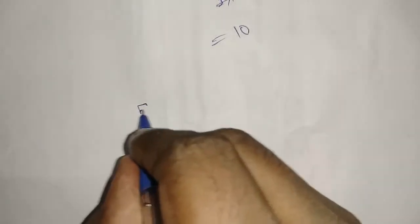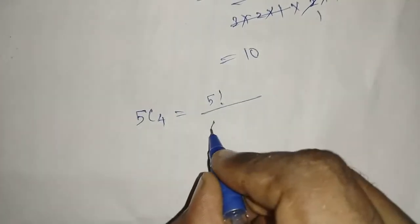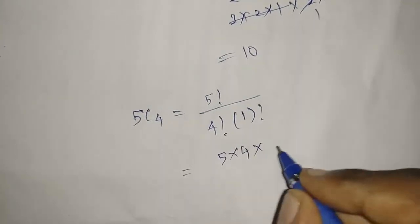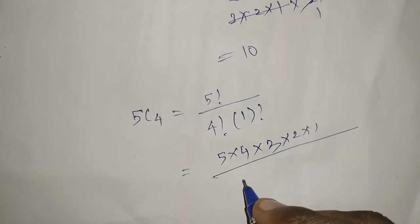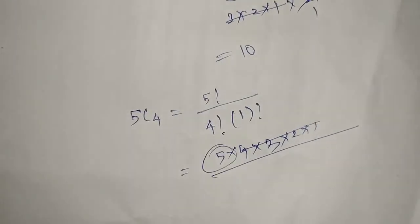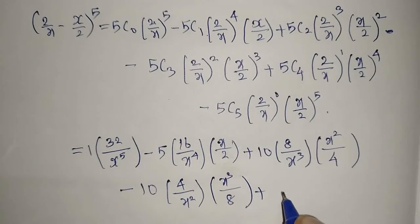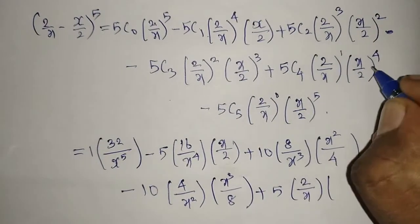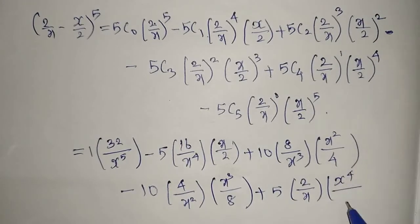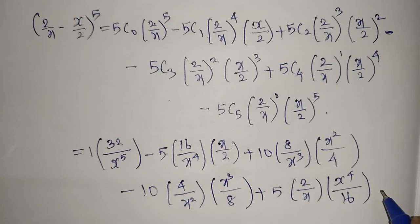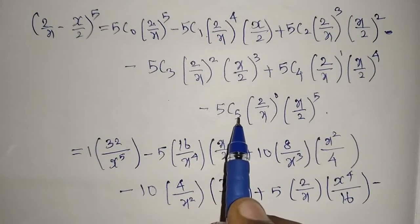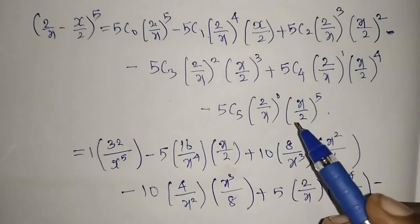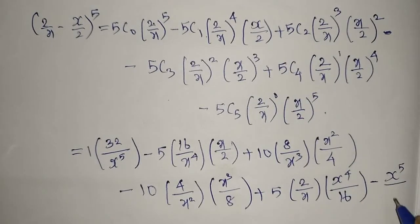For 5C4: 5! / (4! * 1!) = 5. So 5C4 = 5, multiplied by (2/x)^1 = 2/x and (x/2)^4 = x^4/16. For the last term, 5C5 = 1, (2/x)^0 = 1, and (x/2)^5 = x^5/32.